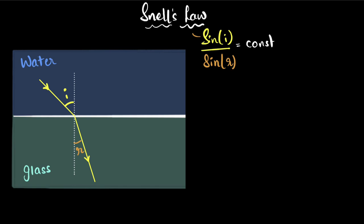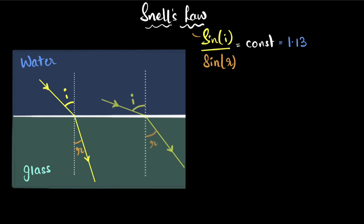For water and glass, this constant happens to be 1.13 as an example, but for different media it will be different numbers. What's important is that even if a ray of light is incident at a different angle, giving a different angle of incidence and a different angle of refraction, sine I divided by sine R will stay the same. This constant is called the refractive index.